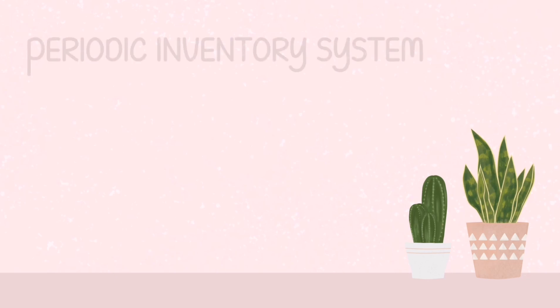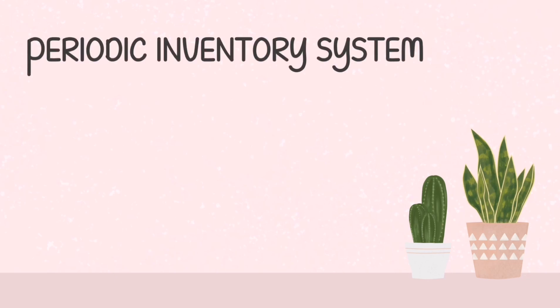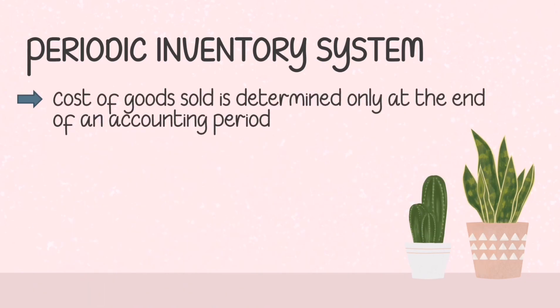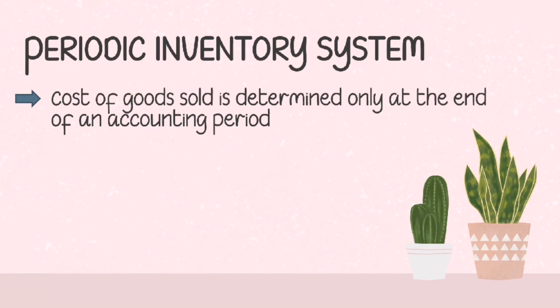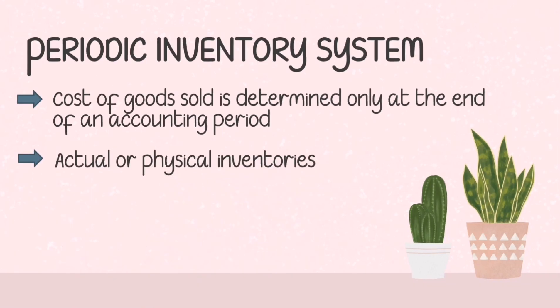This video is about the two types of inventory systems used by businesses. The first one is the periodic inventory system. In here, cost of goods sold is determined only at the end of an accounting period, meaning cost of inventory on hand is updated periodically. Physical counting of goods on hand is done at the end of the reporting period to determine the quantities remaining in inventory.